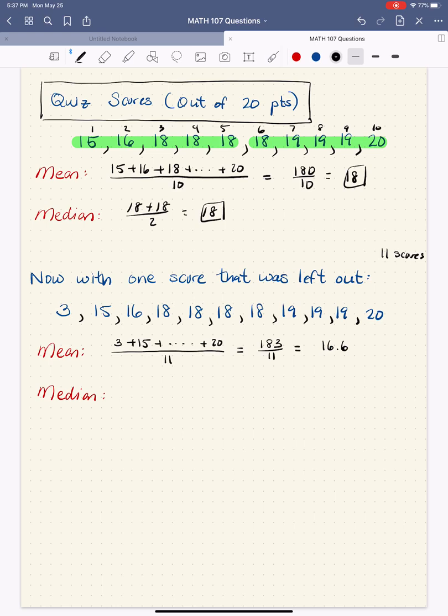Now my median, if I look at my halves of the data, now there's an odd number of data values here, in fact we have 1, 2, 3, 4, 5, 6, 7, 8, 9, 10, 11, so I can't exactly split them into two equal halves, but what I can do is say, here's the top 5, here's the lower 5, and my median is right here, 18, so my median is still 18. So what's the moral of the story?